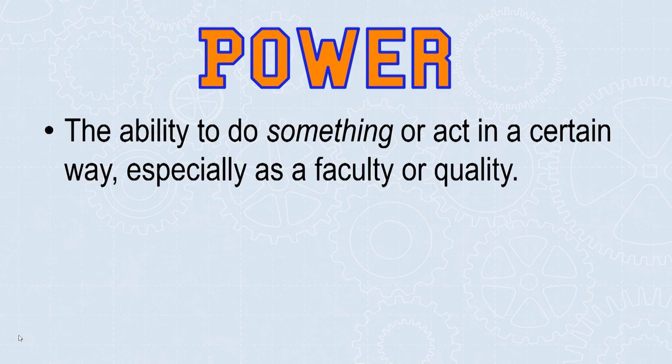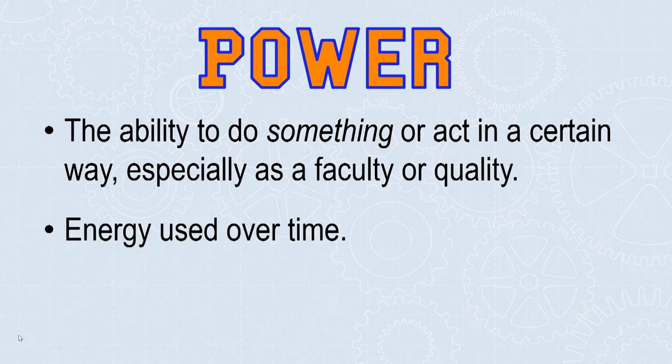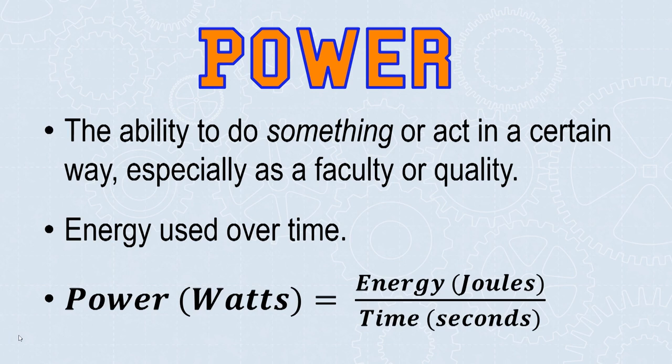By definition, power is the ability to do something or act in a certain way. This something is the ability to lift, stretch, or move something. In simpler terms, power is energy used over time. That simple definition describes the equation for power: power measured in watts equals energy measured in joules divided by time in seconds.